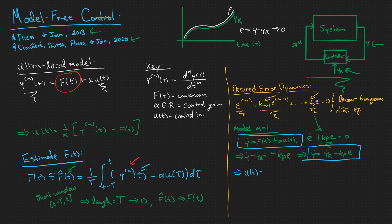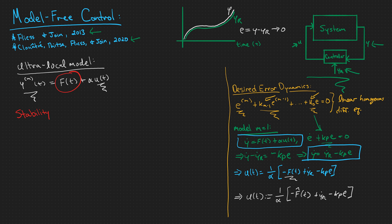And if I did this, I would get u of t is equal to 1 over alpha times negative f of t plus y sub r dot minus kp times e. And this is just about the final form of our controller, but note we don't actually know f of t, so we have to define u of t to be 1 over alpha times negative f hat of t plus y sub r dot minus kp times e.